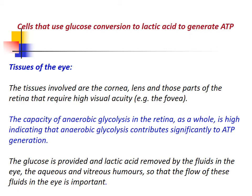Cells that use glucose conversion to lactic acid to generate ATP — tissues of the eye. The tissues involved are the cornea, lens, and those parts of the retina that require high visual acuity. The capacity of anaerobic glycolysis in the retina as a whole is high, indicating that anaerobic glycolysis contributes significantly to ATP generation.